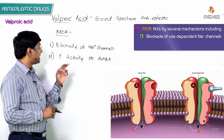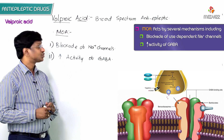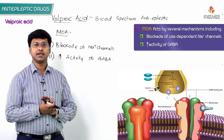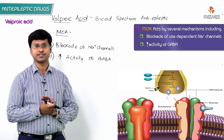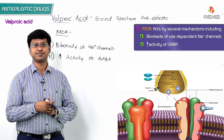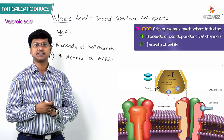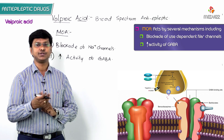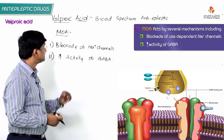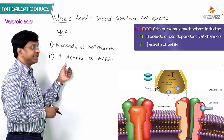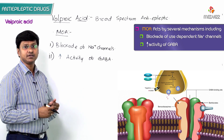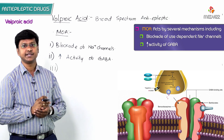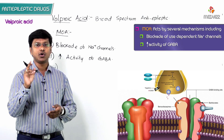The second mechanism is an increase in the activity of GABA. GABA is an inhibitory neurotransmitter, so if levels of inhibitory neurotransmitters are increased, the abnormal neuronal discharge is reduced, thereby suppressing seizures and helping in their treatment.